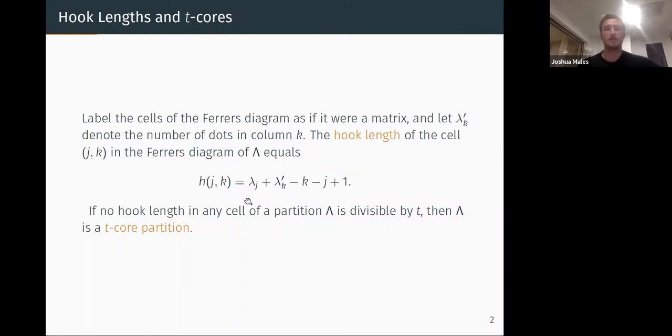If no hook length in any cell of a partition, so if I calculate this formula for every cell in our partition, and if none of these is divisible by t, then lambda is called a t-core partition. So a brief example.